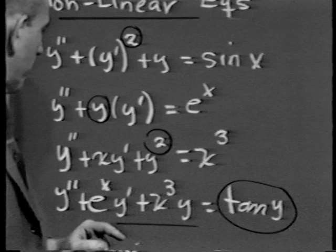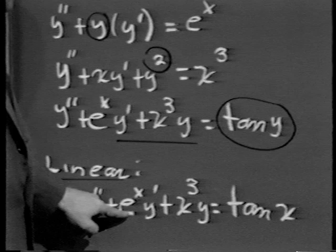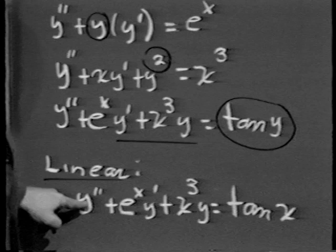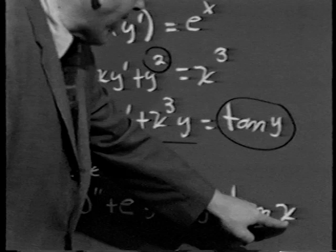y double prime plus xy prime plus y squared equals x cubed is not linear because y appears to a power higher than the first. And y double prime plus e to the x y prime plus x cubed y equals tan y is not linear because the right-hand side depends on y rather than x alone. An example of a linear equation would be y double prime plus e to the x y prime plus x cubed y equals tangent x.